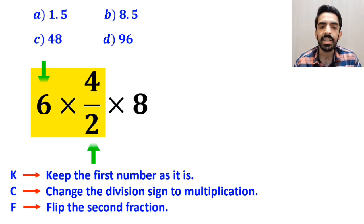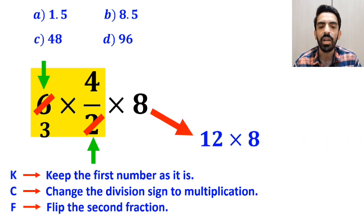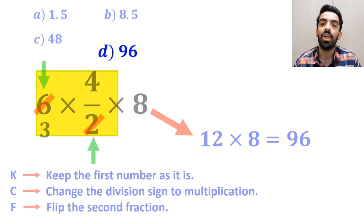As you can see, the number 6 simplifies with the 2 in the denominator, and this expression simplifies to 12 multiplied by 8, which finally gives us the answer 96. Therefore, option D is the correct answer to this question.